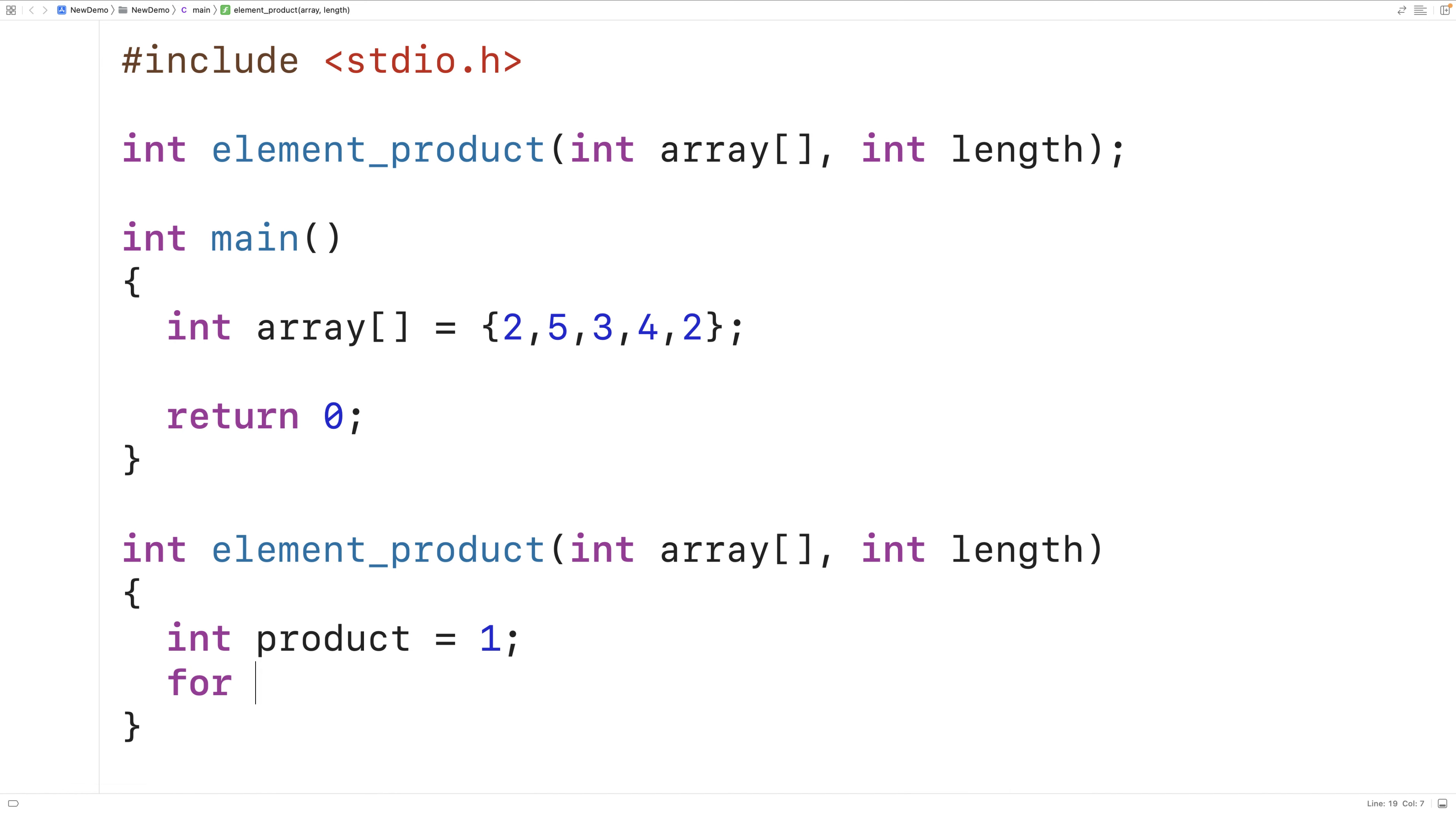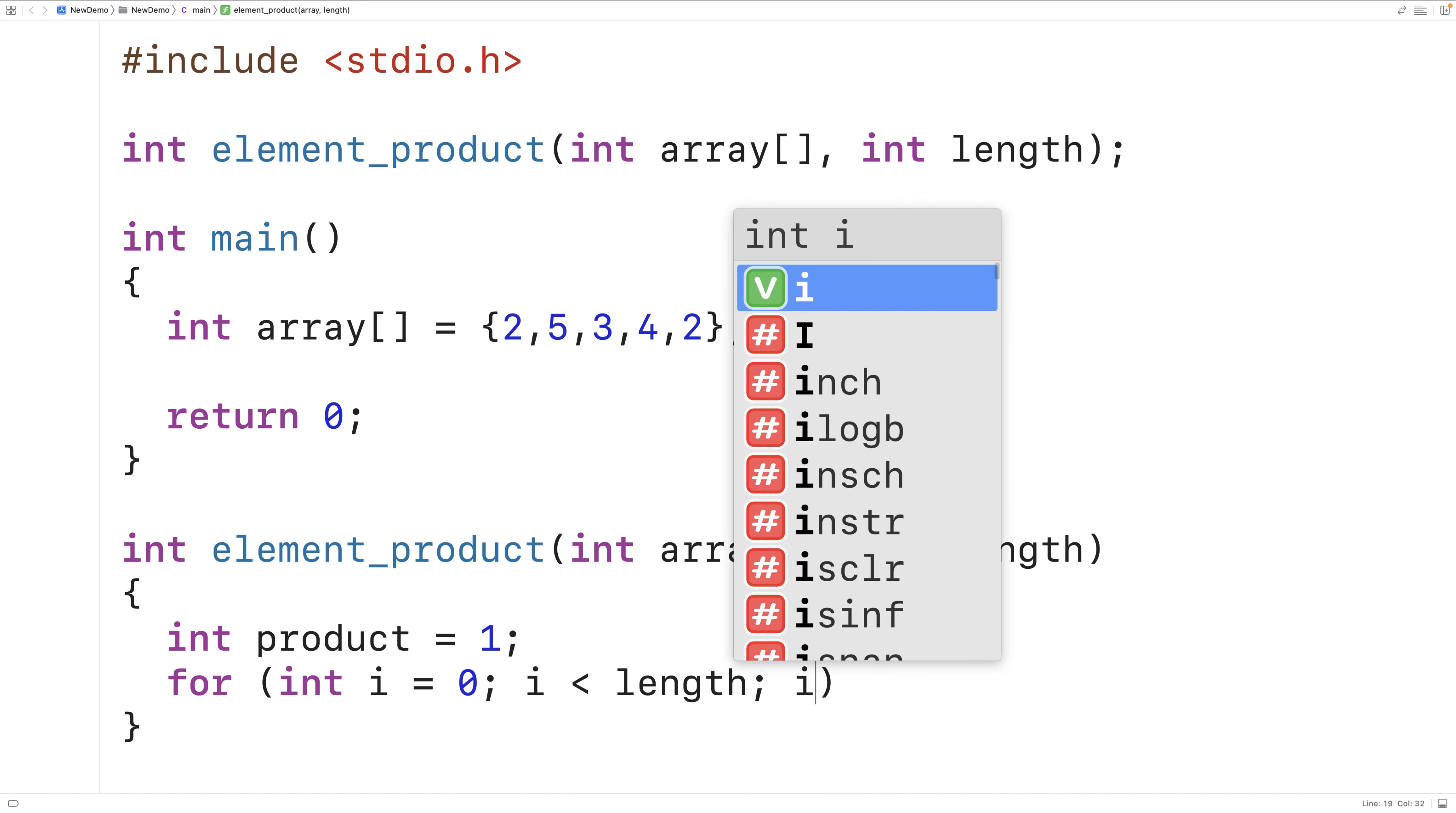Next we'll create the loop. We'll have for int i is equal to zero, i is less than length, i plus plus.